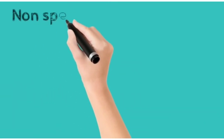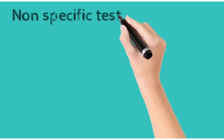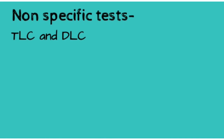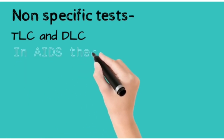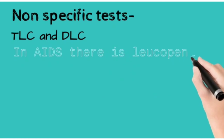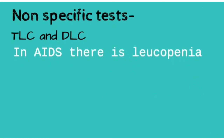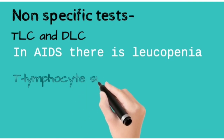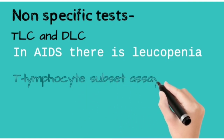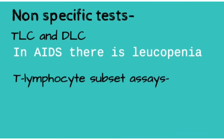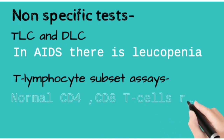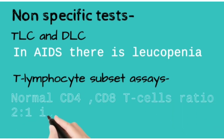Non-specific tests include TLC and DLC — total lymphocyte count and differential lymphocyte count. In AIDS, leukopenia is present. T lymphocyte subset assays are also done; the normal CD4 to CD8 T cell ratio of 2:1 is reversed to 0.5 in AIDS, which is an indication of AIDS.